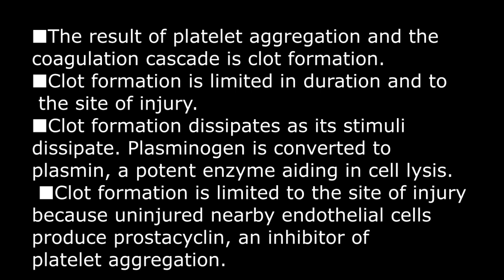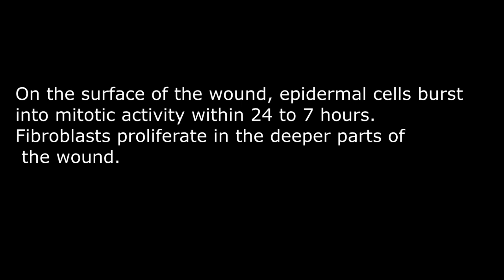Clot formation is limited in duration and to the site of injury, and dissipates as its stimuli dissipate. Plasminogen is converted to plasmin, a potent enzyme aiding in cell lysis. Clot formation is limited to the site of injury because uninjured nearby endothelial cells produce prostacyclin, an inhibitor of platelet aggregation. In the uninjured nearby areas, antithrombin III binds thrombin, and protein C binds factors of the coagulation cascade, namely factors V and VIII.